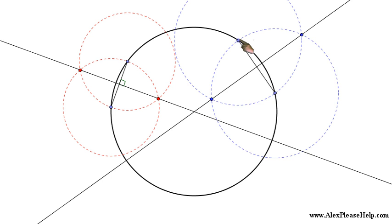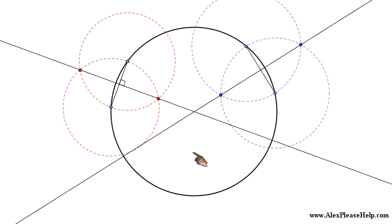These two bisectors intersect at the middle. Where they intersect, that's the center of the circle.